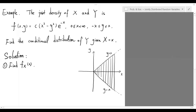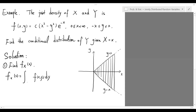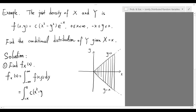Step 1: Find the density function for X, which we need as an ingredient for finding the conditional density. Recall that the density function of X is obtained by integrating the joint density function with respect to y. Since the non-zero region of this function is only from negative x to x, we can restrict our integral interval to this region. Over this interval, the expression is simply C times x squared minus y squared times e to the negative x.